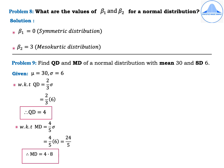For mean deviation, the formula is MD = (4/5)σ = (4/5) × 6 = 24/5. Therefore MD = 4.8.